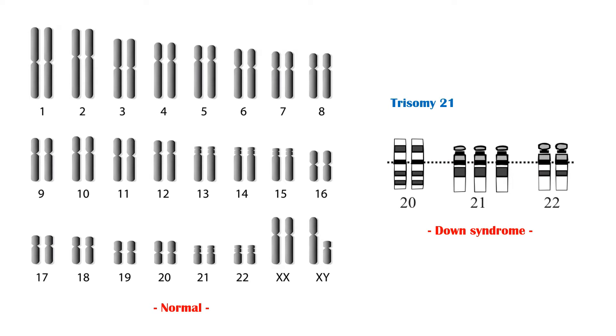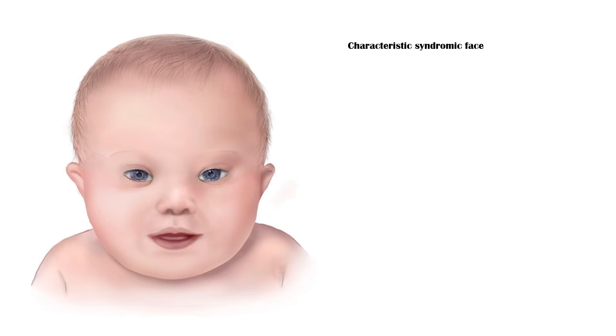Children with Down syndrome have a characteristic craniofacial appearance called Down facies. They have a flat nasal bridge, as indicated by the red arrow in this image.